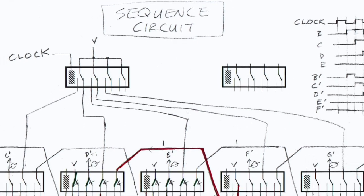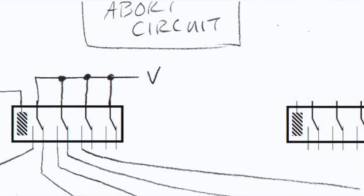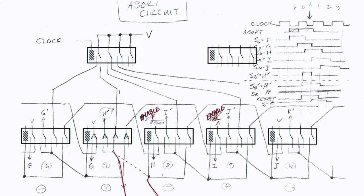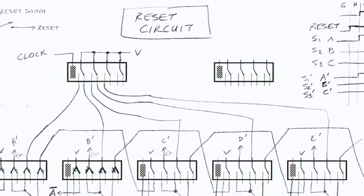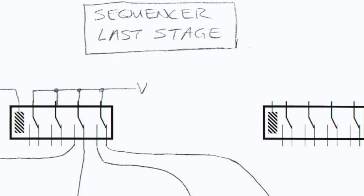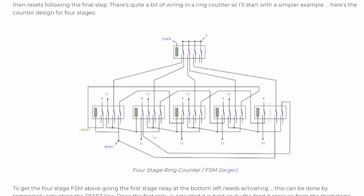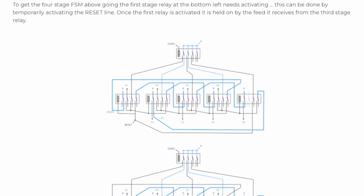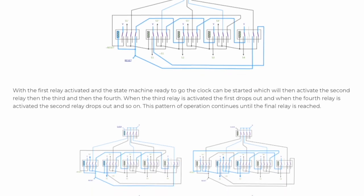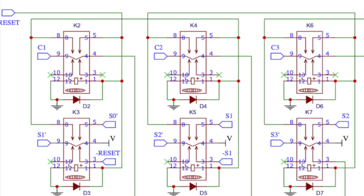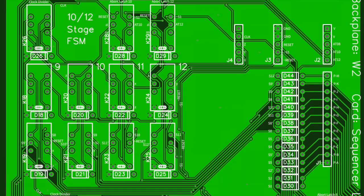Dr. Harry Porter designed an ingenious sequencer circuit that includes the ability to abort or restart the sequencer at different stages, making the computer more efficient when executing simpler instructions. And Paul Law has kindly redocumented those drawings in detail on his blog and has even provided the schematics and PCB designs for his two-card sequencer. So before I get started on my PCB design for the sequencer I just have to cover off a few differences between those designs and mine.